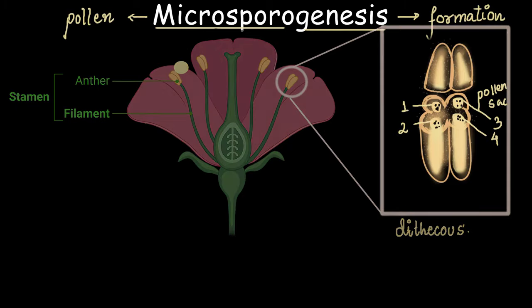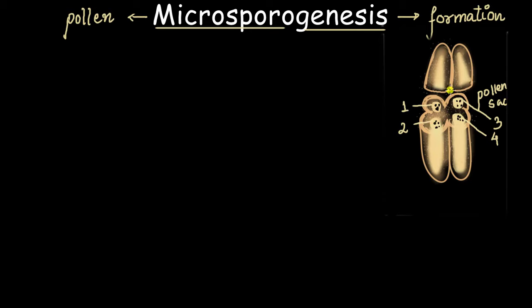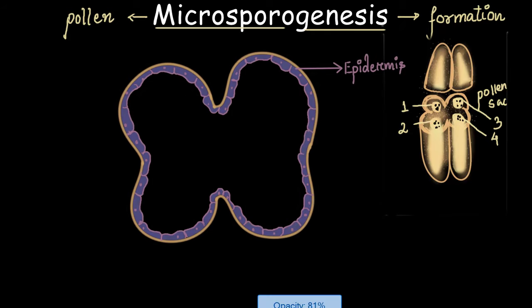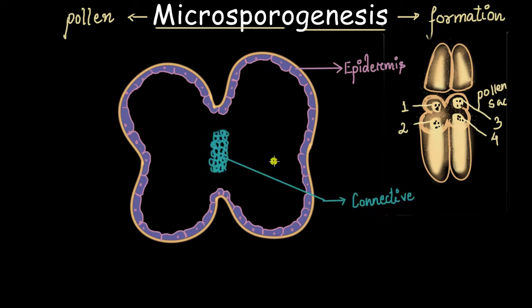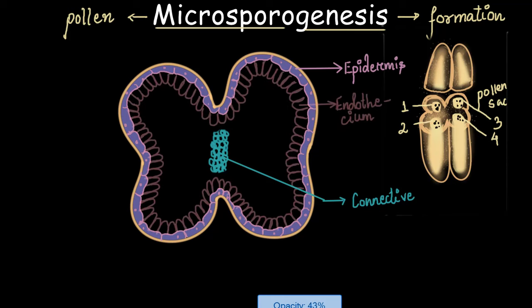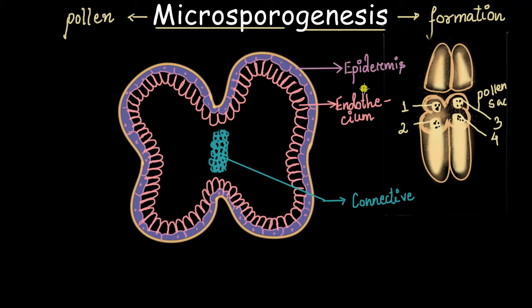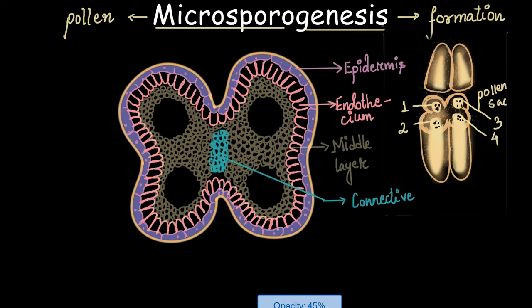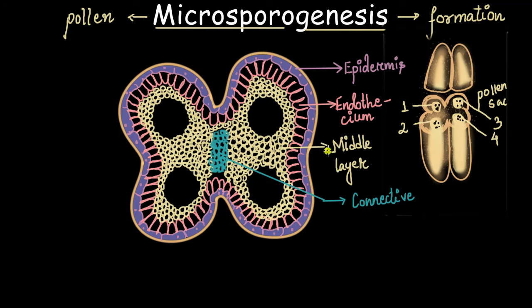Let's zoom in even further. This region is called the connective, and through this connective the vascular tissue runs, through which the anther gets nourishment. This is the tissue that keeps the two lobes of the anther connected. Apart from that, beneath the epidermal layer, we also have another layer called the endothecium. The epidermal layer and the endothecium, along with another layer called the middle layer, together perform the function of protection.